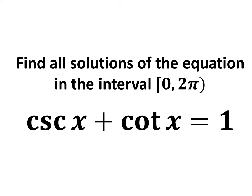In this video, we will learn to find all solutions to the equation cosecant of x plus cotangent of x is equal to 1 in the interval 0 to 2 times pi.